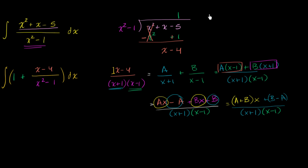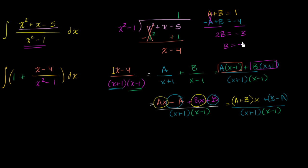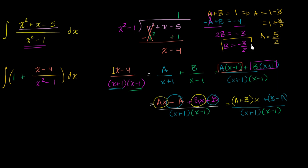Adding the left-hand sides and the right-hand sides, the a's disappear and we get two b equals negative three, so b equals negative three halves. Then a equals one minus b, which equals one plus three halves, giving us five halves. So a equals five halves and b equals negative three halves.